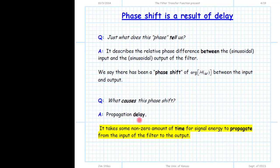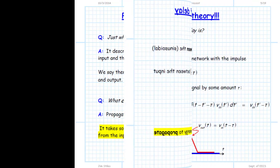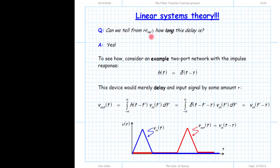Moreover, understanding propagation delay is key to identifying problematic filter behavior. Can we determine the propagation delay through a filter — how long it takes a signal to propagate from input to output — from this complex transfer function? The answer is yes, but it's not particularly simple. It takes some mathematical manipulation. To understand what that manipulation is and why we do it, we'll spend the remainder of this presentation on just that — going from page five through to page 19.